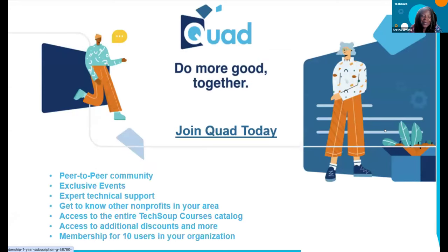If you need closed captions, someone has already turned them on — just click on the CC button at the bottom of your screen. Also, I want to mention TechSoup's Quad community at techsoup.org. Just type in the word Quad to learn more. It's a peer-to-peer community — very new — where you get memberships for up to 10 users, access to TechSoup catalog offers, and can connect with other nonprofits in your area.